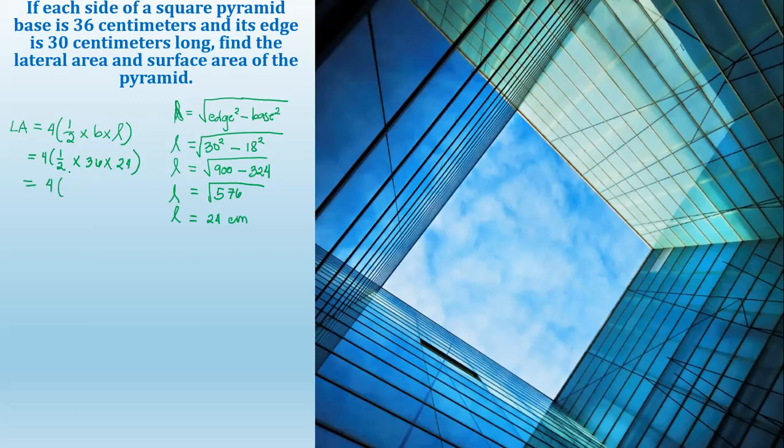4 times 1/2 times 36 times 24 is equal to 864. Divided by 2 equals 432. And 432 times 4 is equal to 1728 centimeters squared. So we have now the lateral area.